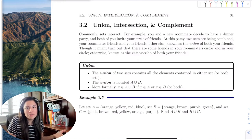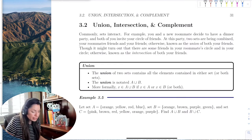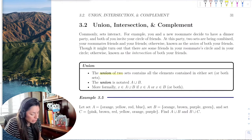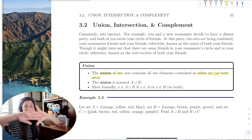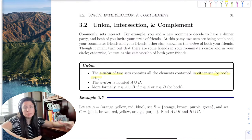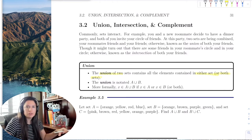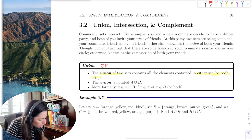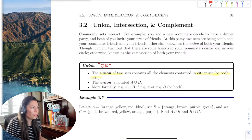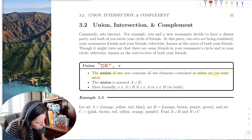So let's start with union. The union of two sets contains all elements contained in either set or both. Essentially, you're taking all your roommate's friends and all your friends — whether you have some in common or not — you're taking the whole group and sitting them down for dinner. That's the union. The word 'or' is associated with union: A or B or both, and we want all elements.